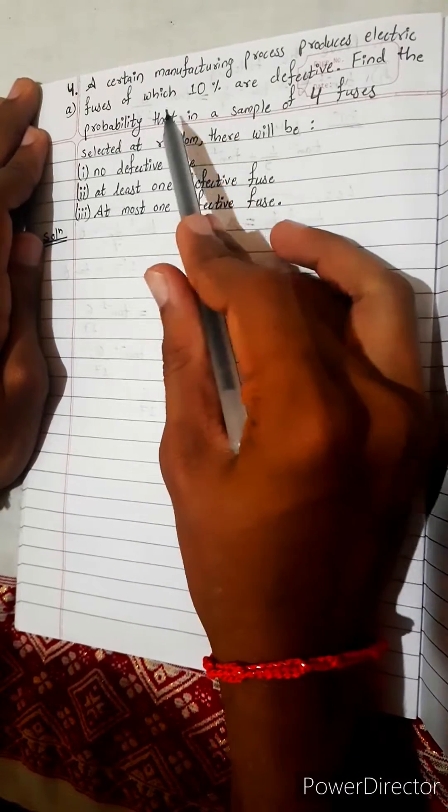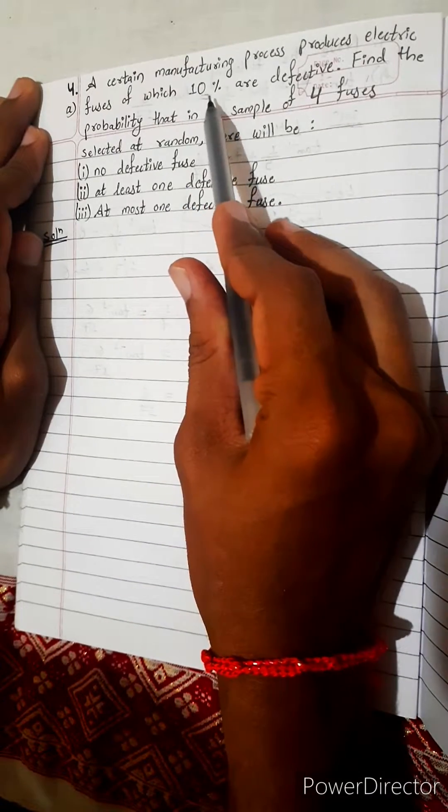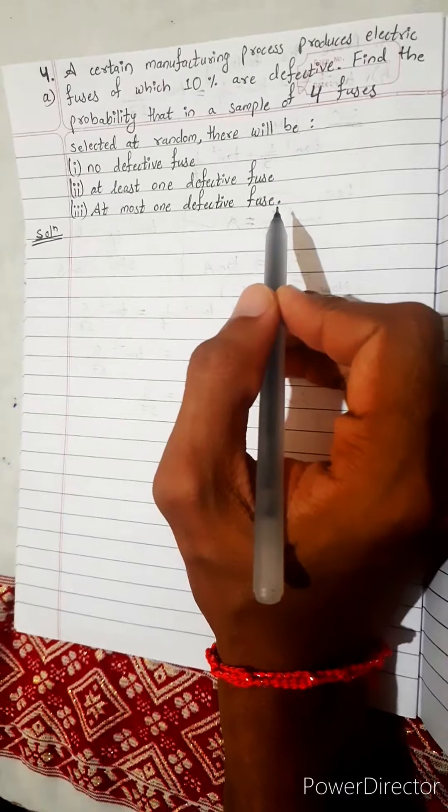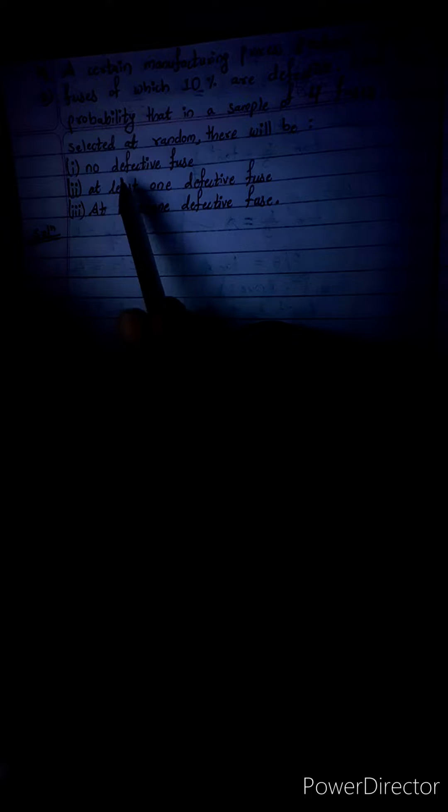A certain manufacturing process produces electric fuses, of which 10% are defective. Find the probability that in a sample of 4 fuses selected at random, there will be no defective fuse.